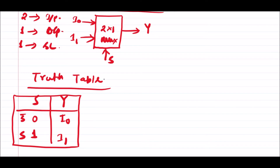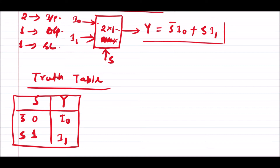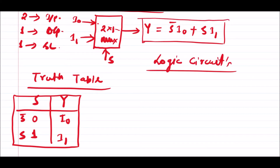Next we will write down the Boolean function for the 2x1 multiplexer. The Boolean equation can be written as: y = (s̄·i0) + (s·i1). This means when selection line is s complement, input i0 appears at output, and when selection line is s, input i1 appears at output. For designing the logic circuit, we always need this Boolean equation.